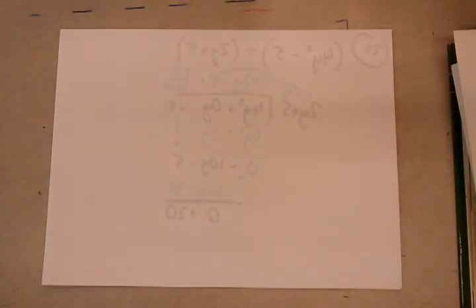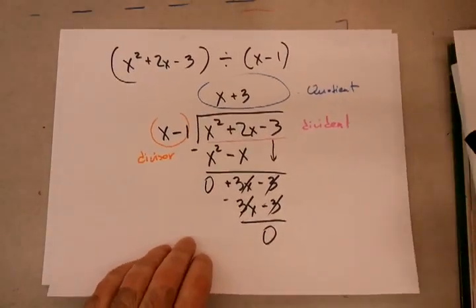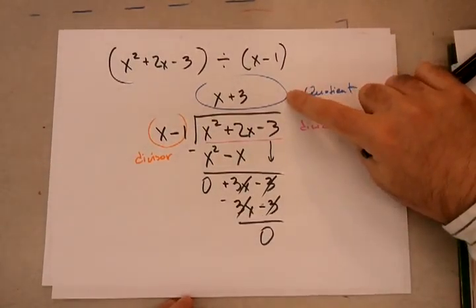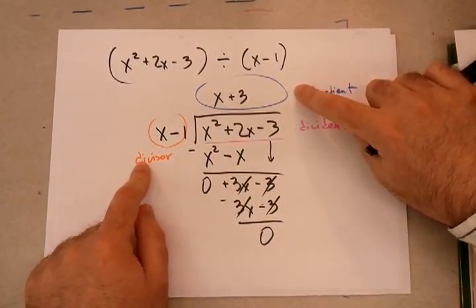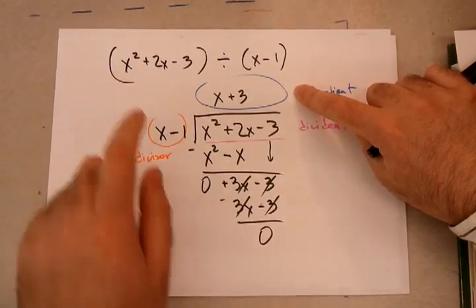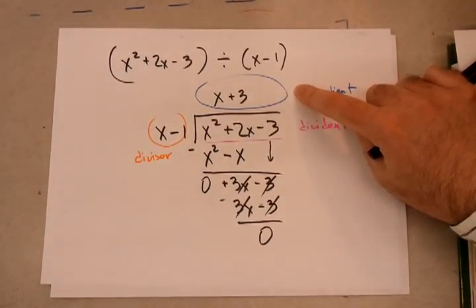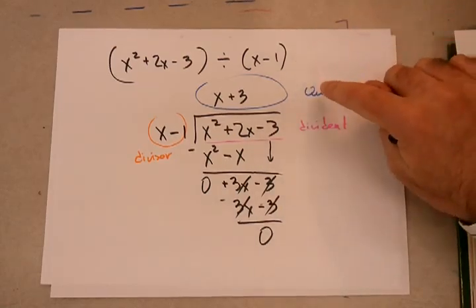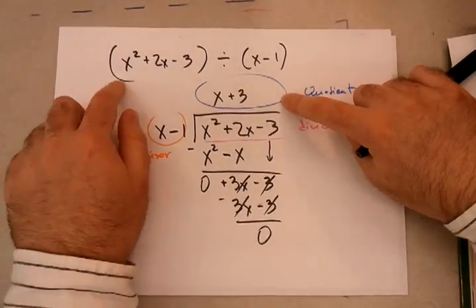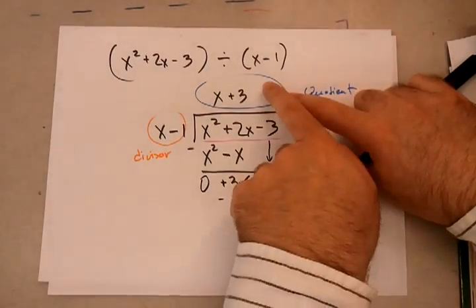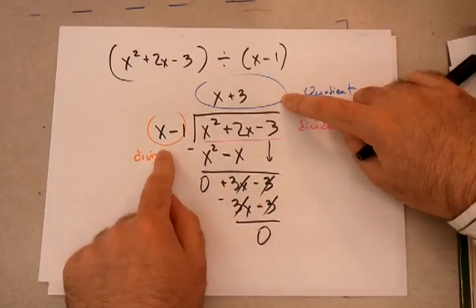If you remember my part 3 video I showed you how to check your work. And to check your work, let me bring this back up again, I told you that you can take your quotient, your answer, and multiply it against the divisor. So if you take the quotient and you multiply it against the divisor, you should get the trinomial or the dividend. So always works. If you take your answer, you multiply it against the divisor, you should get your dividend back. So this is a binomial, this is a binomial.